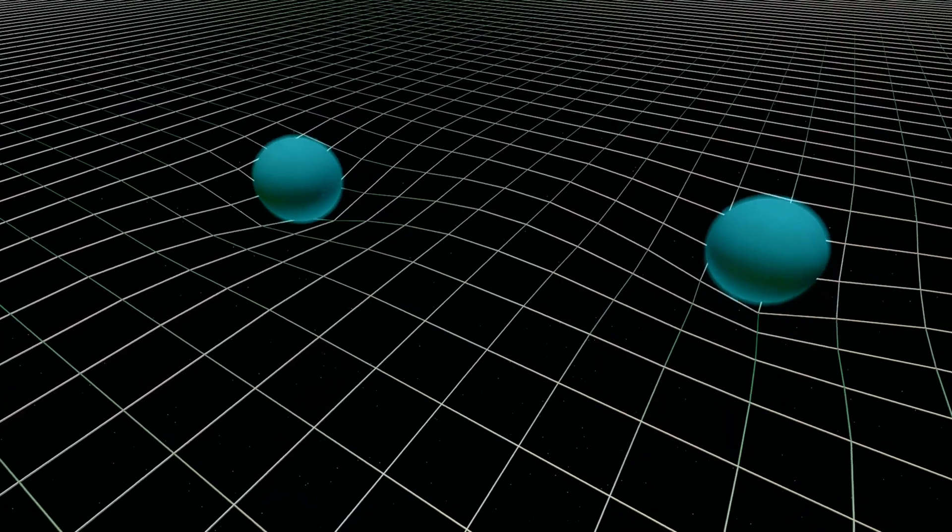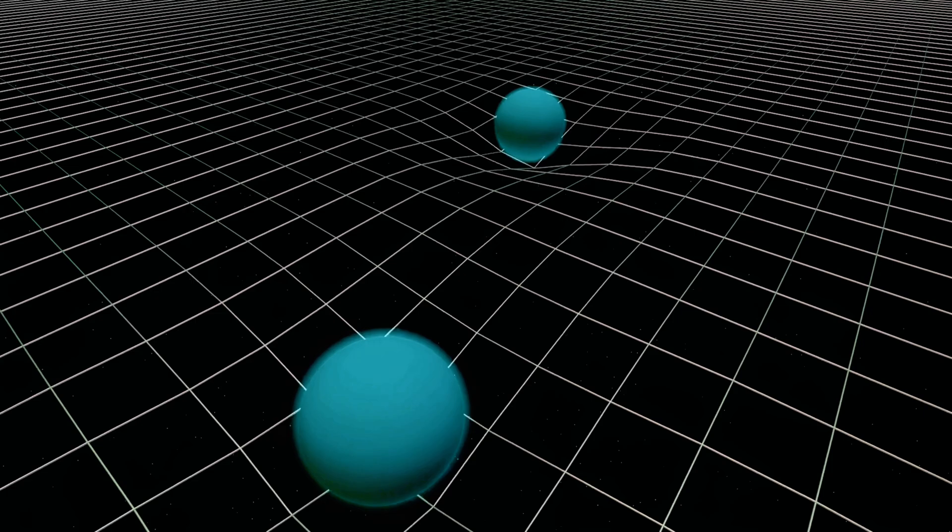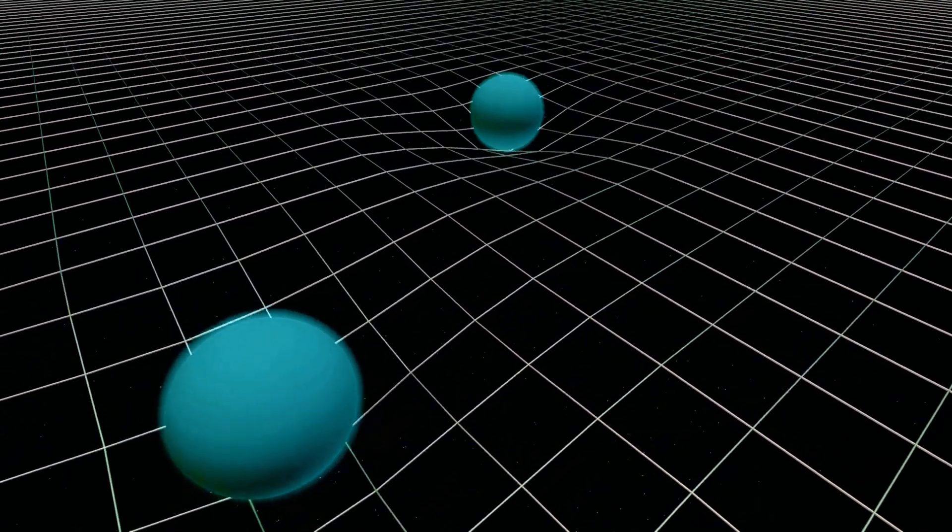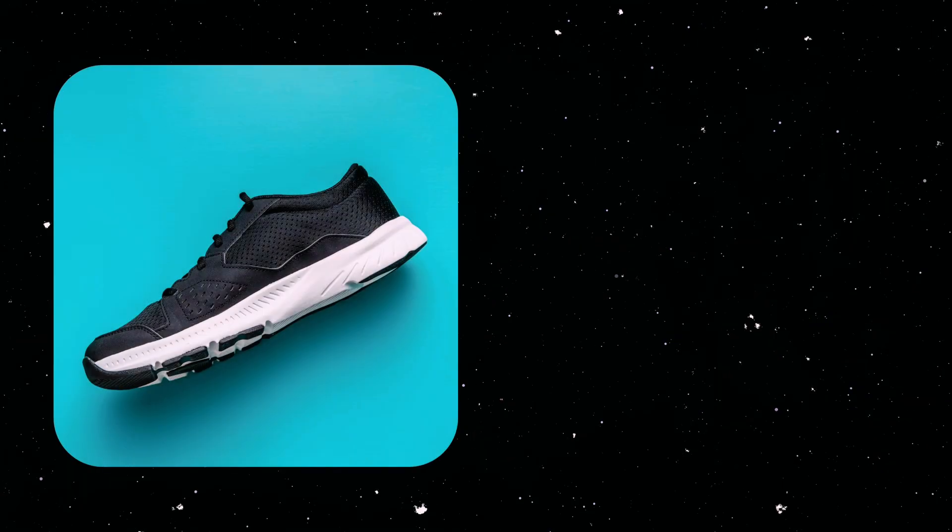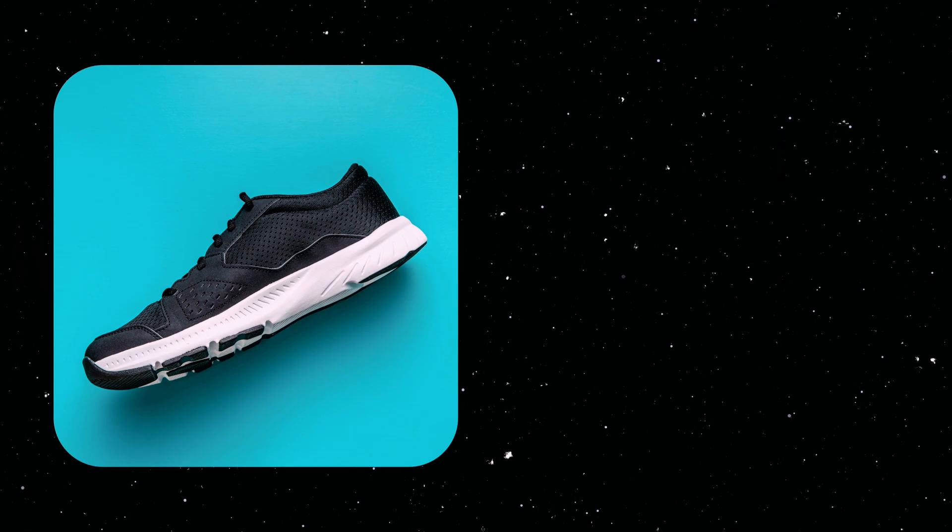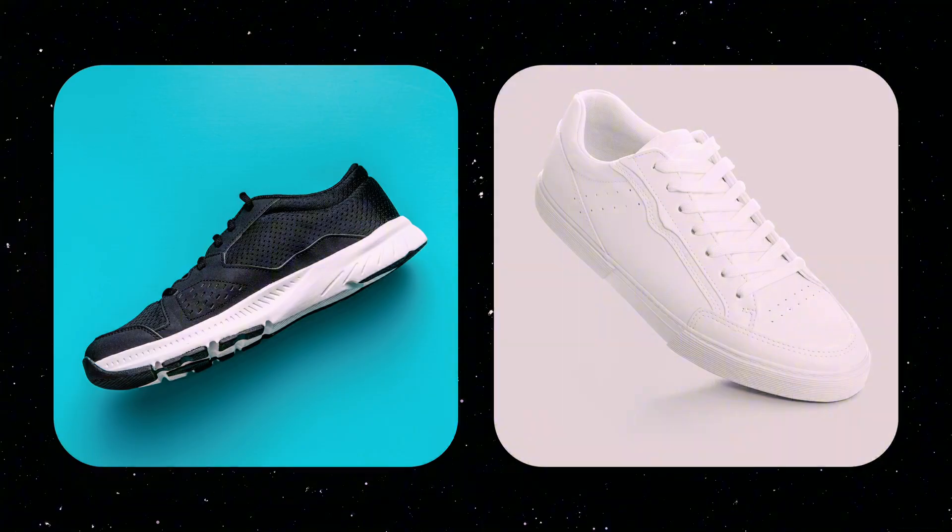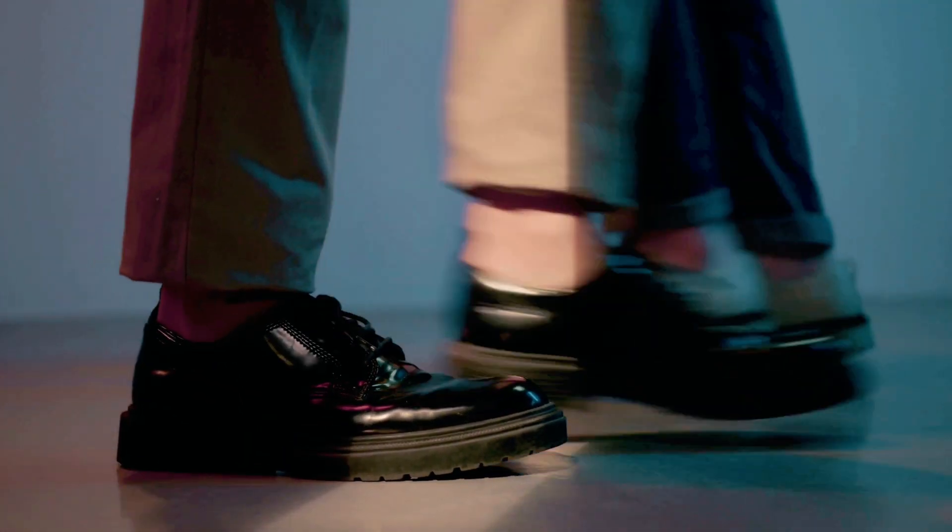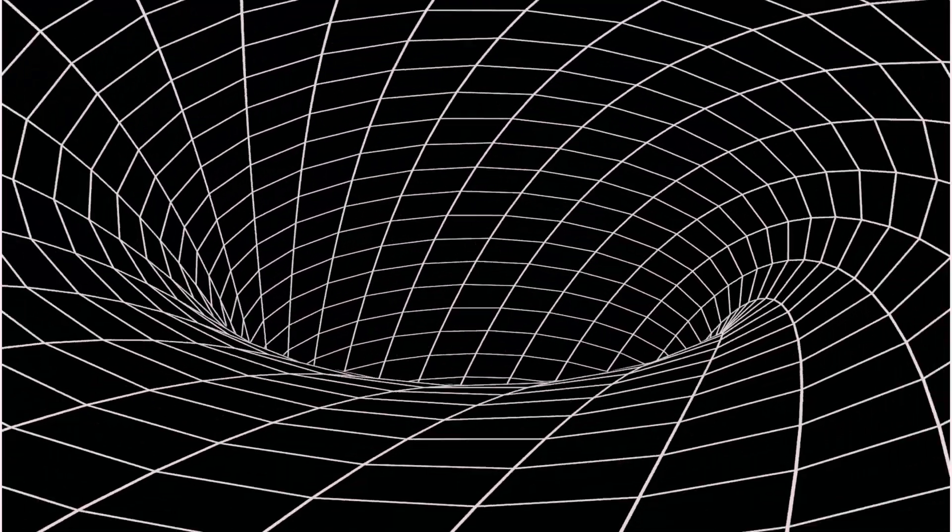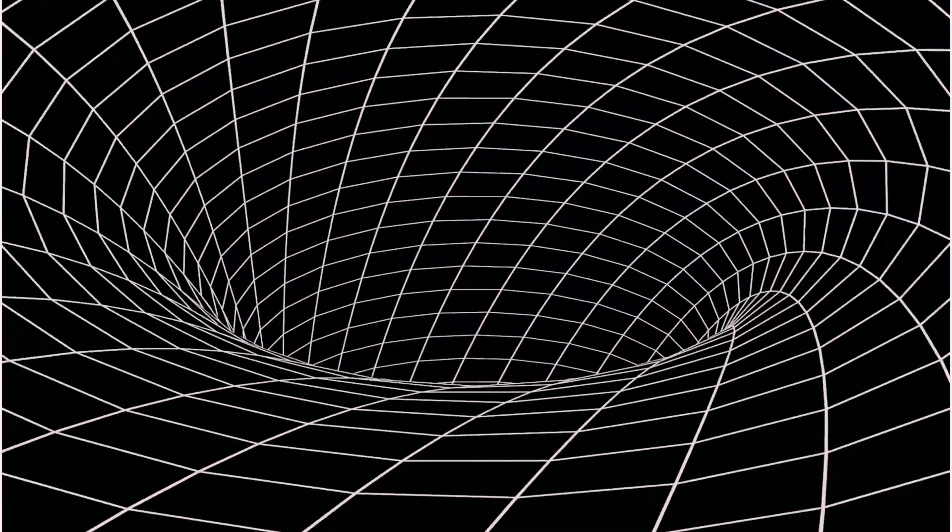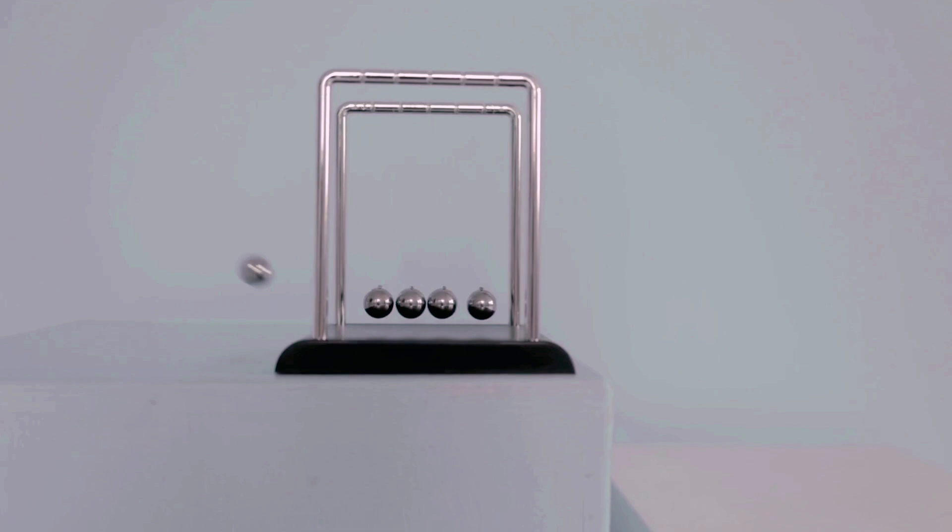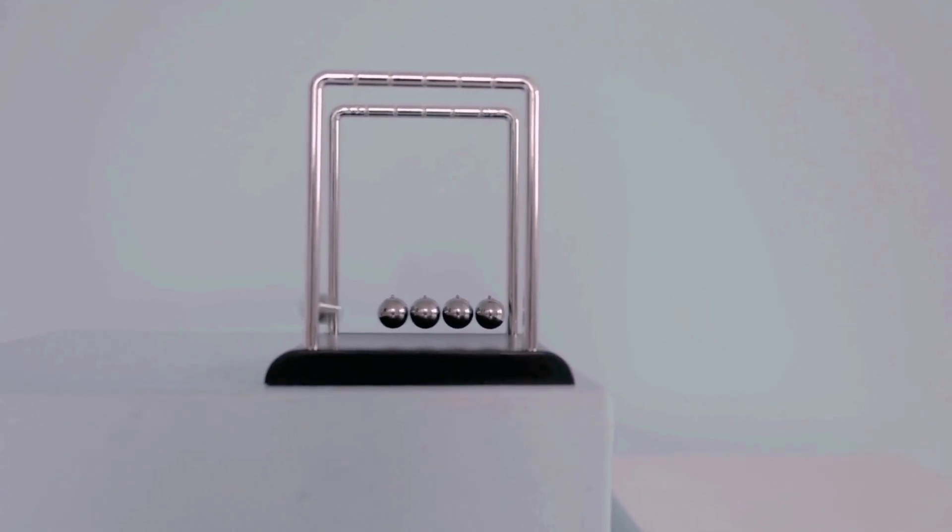At first glance, it's tempting to think of these particles as if they were two distinct objects with predetermined characteristics. Imagine a pair of shoes, one black and one white. No matter how far apart you place these shoes, their colors remain unchanged because those colors are inherent properties of each shoe. This analogy reflects what physicists call local realism, the idea that particles have set local properties independent of observation, and that no influence or information can travel faster than the speed of light.